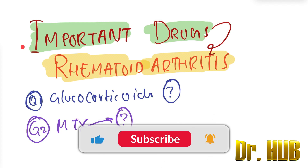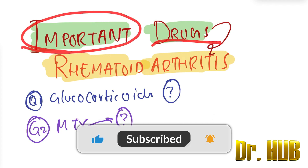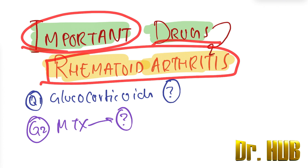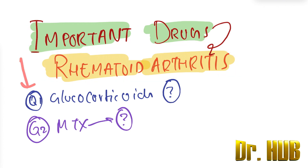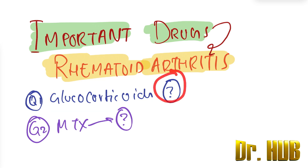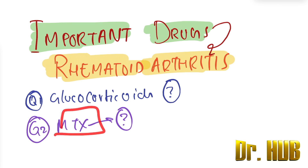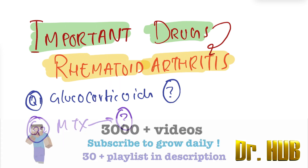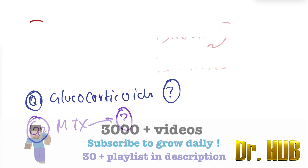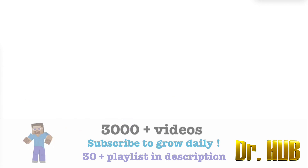The topic we'll be discussing is the important drugs in the case of rheumatoid arthritis. We start off with questions. The first question is: comment on glucocorticoid use in rheumatoid arthritis. The second question is: comment on methotrexate use in rheumatoid arthritis. In this video you will find the answers and learn in detail about this topic.